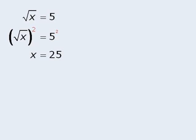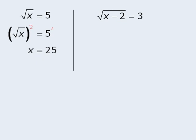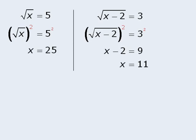Here's another equation. To solve this one, we'll first raise both sides to the power of 2. On the left-hand side, the square root of x minus 2, all to the power of 2, is equal to x minus 2. On the right-hand side, 3 to the power of 2 equals 9. From here, we can add 2 to both sides to see that x is equal to 11.